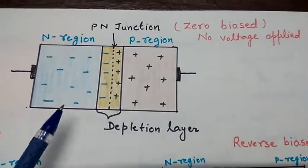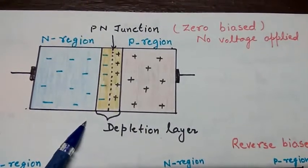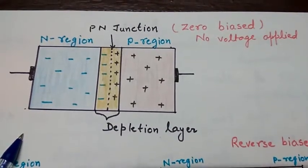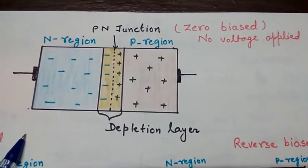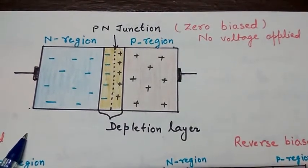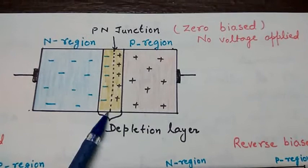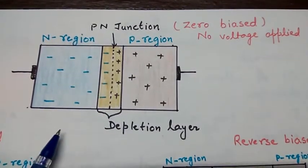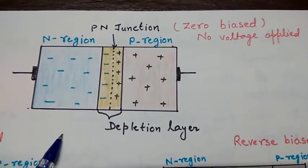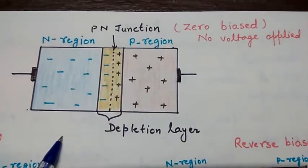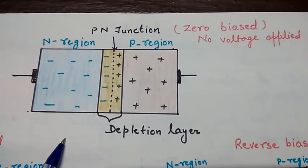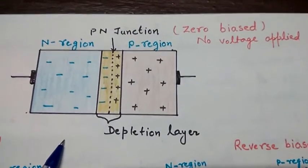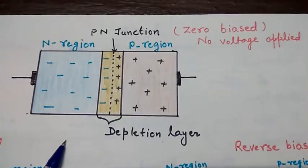When these two materials combine, electrons flow from the excess part to the deficient part and form a layer known as the depletion layer. This layer prevents the current flow because at this region the negative and positive charges combine and form immovable charge.